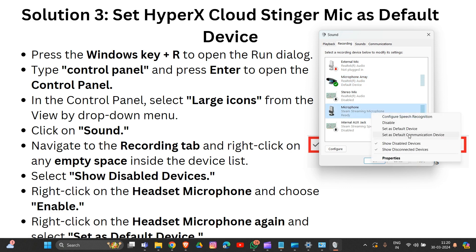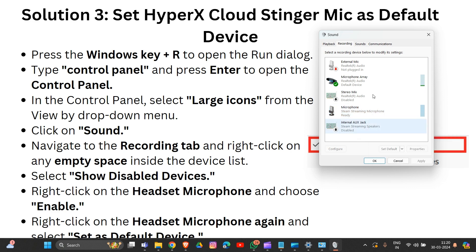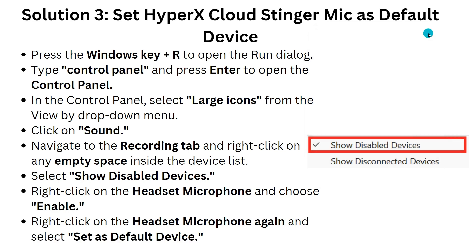After enabling it, right-click on the headset microphone again and select 'Set as Default Device'. Once you find your headset and have enabled it, click 'Set as Default Device'. That is how you complete this solution.